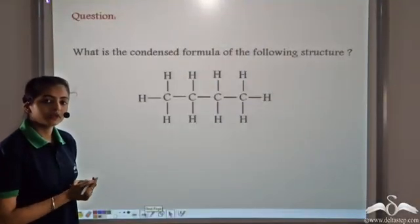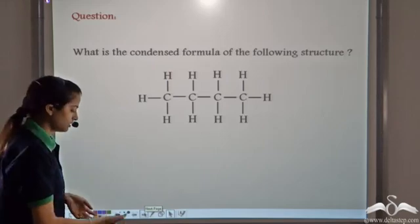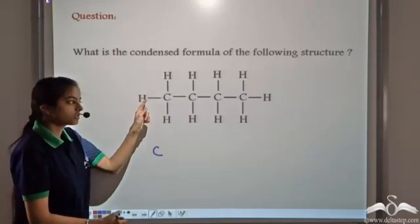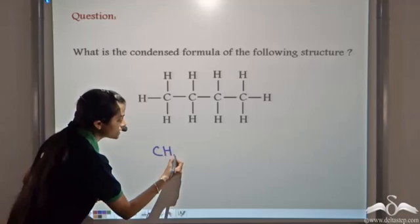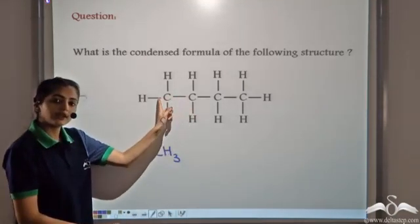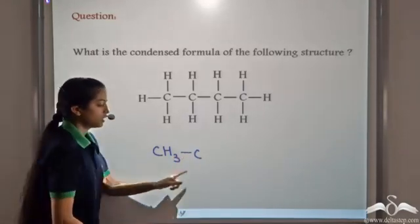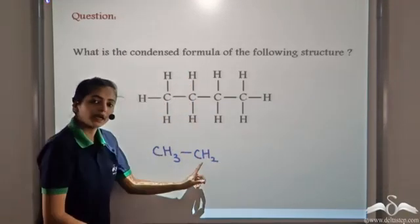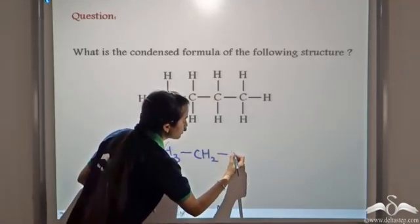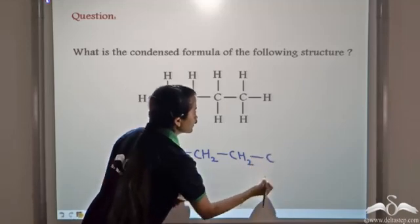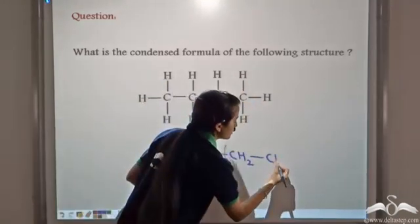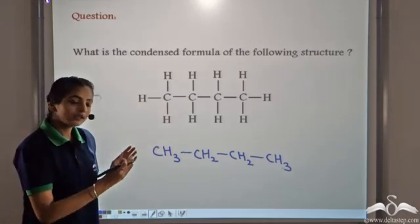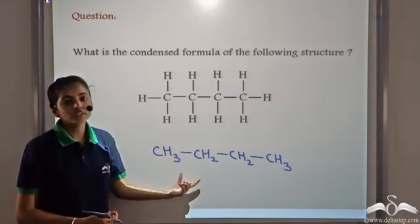Let's try to write the condensed or abbreviated formula for this structure. We write the first carbon atom, which is linked to three hydrogen atoms, so we can remove these covalent bonds. We then show the linkage between the two carbon atoms. The second carbon atom is linked to two hydrogen atoms, so we remove those covalent bonds and simply write the number of hydrogen atoms. Similarly for the remaining carbon atoms, with the last carbon atom having three hydrogen atoms. This is the condensed or abbreviated formula of this organic compound.